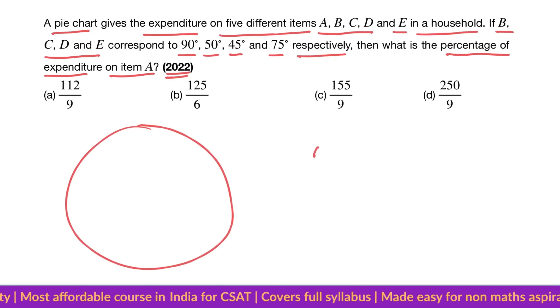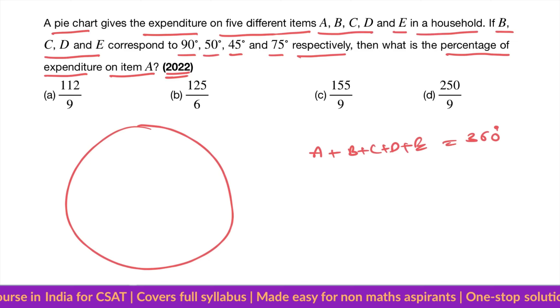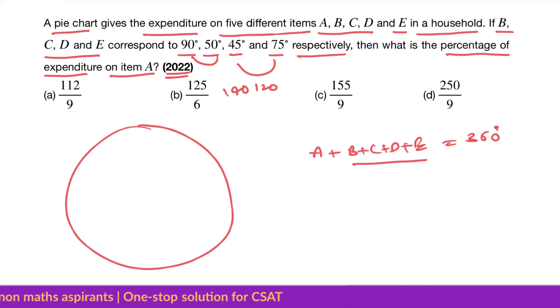So all the items should be 360 degrees. Now B, C, D, E is given. D and E are 45 and 75, that's 120. B and C are 90 and 50, that's 140. 140 plus 120, that is 260.